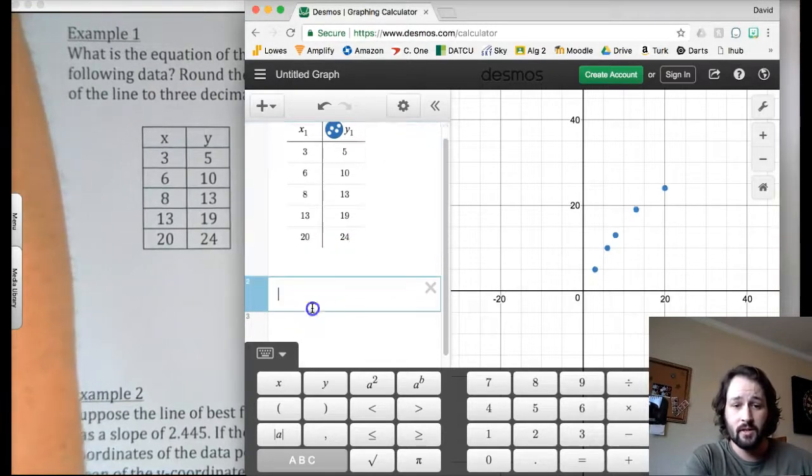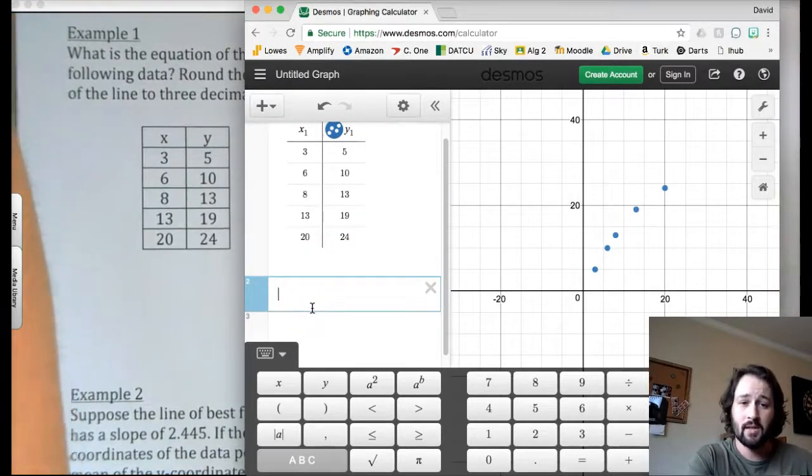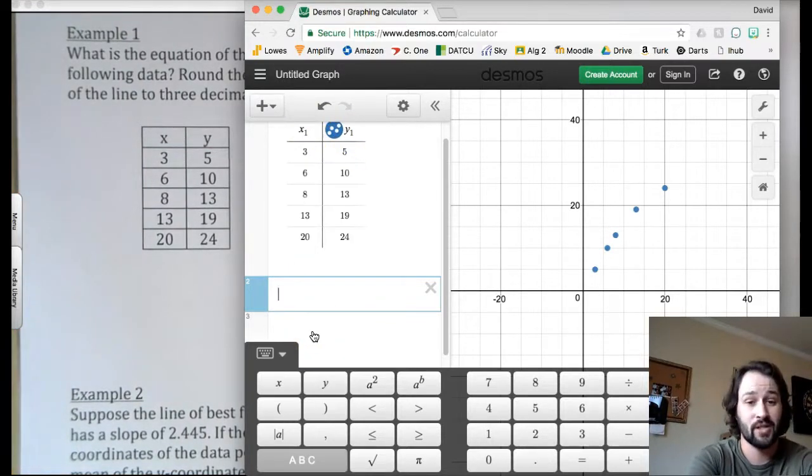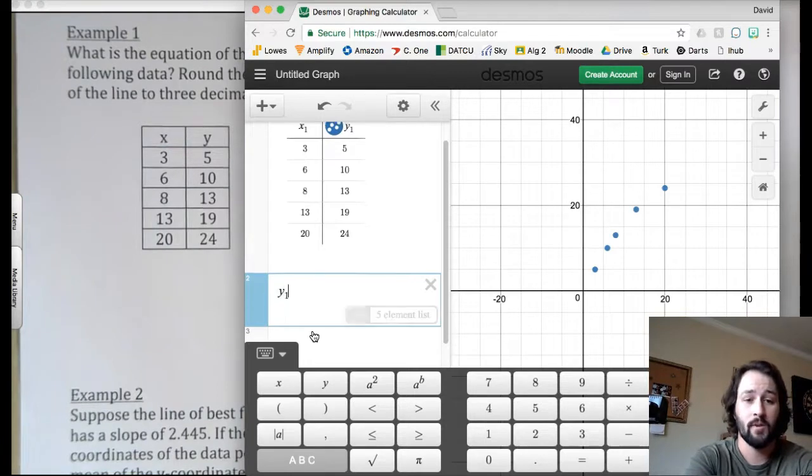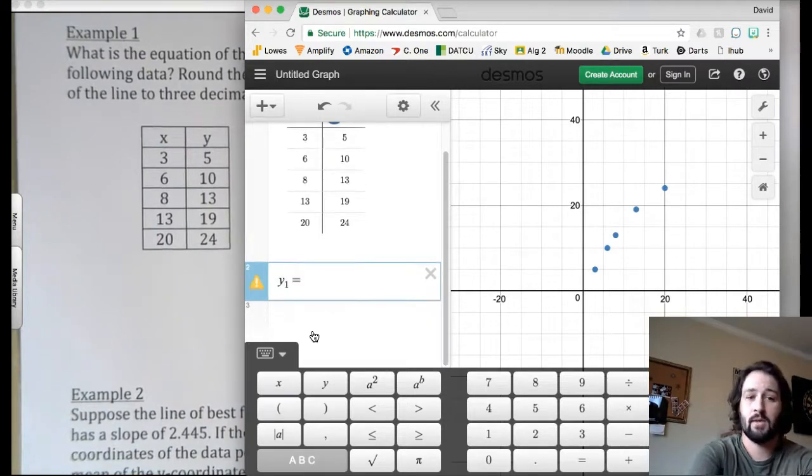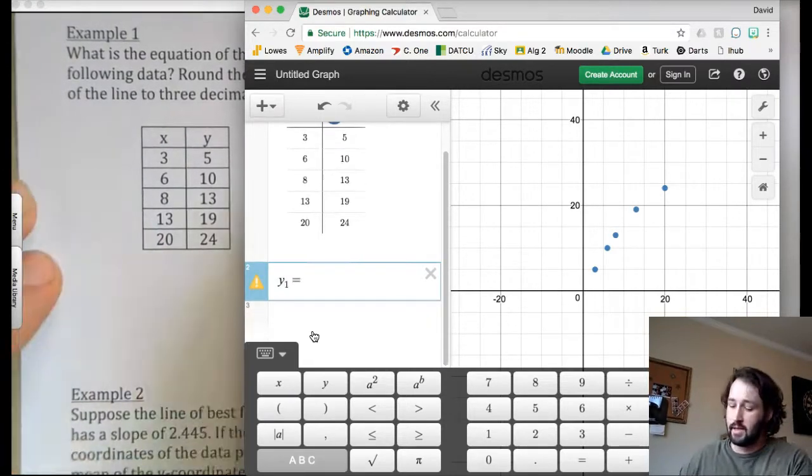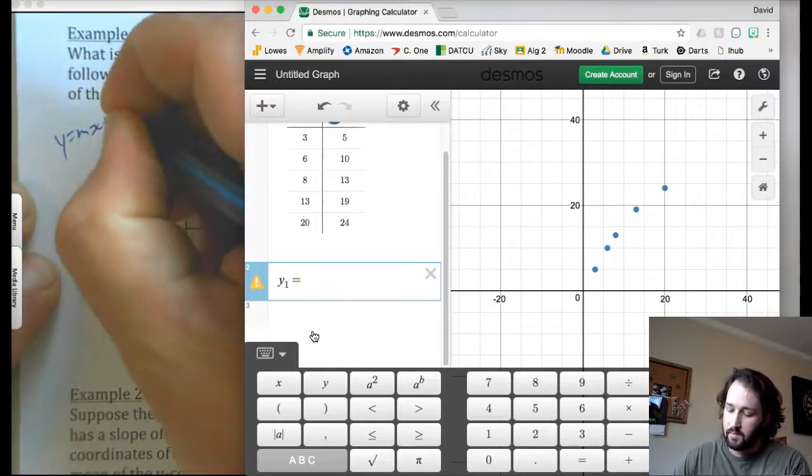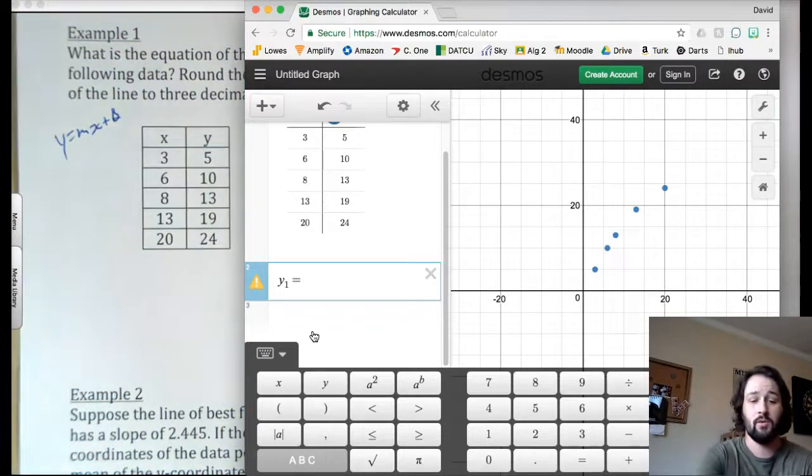So now I'll go to another equation. I'll click on another equation. And the way this is going to work, notice up here you have X1 and you have Y1. So the way that we're going to do this is called regression. I'm going to type Y1 equals. Now, remember, a linear function is Y equals MX plus B.